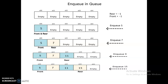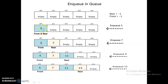Now let's see the enqueue operation — how insertion is done. Initially the queue is empty, so front equals minus one and rear equals minus one. When you enqueue 5, since front equals minus one and rear equals minus one, you increment both: front equals front plus one and rear equals rear plus one. So front equals zero and rear equals zero, and 5 is now in the queue.